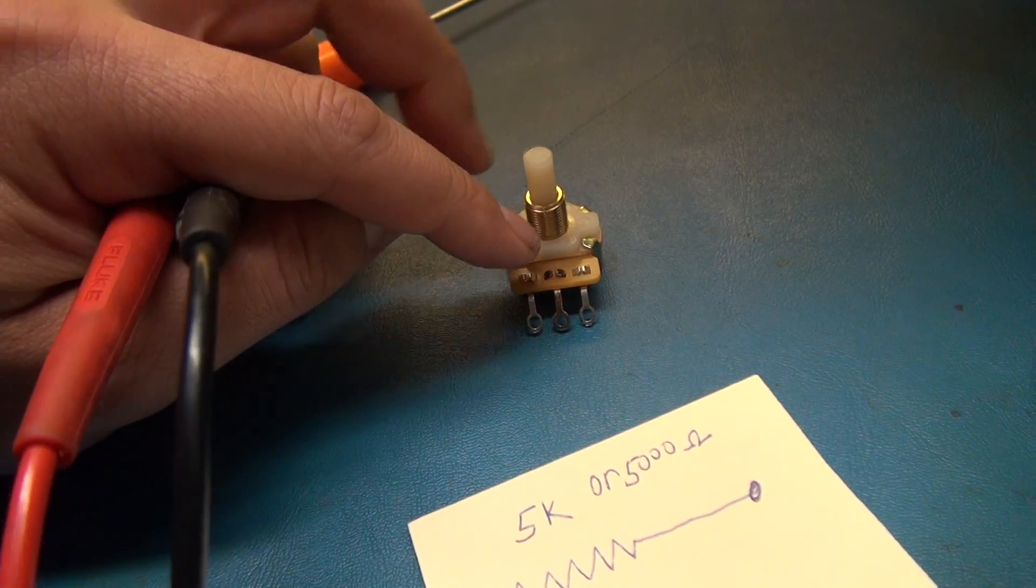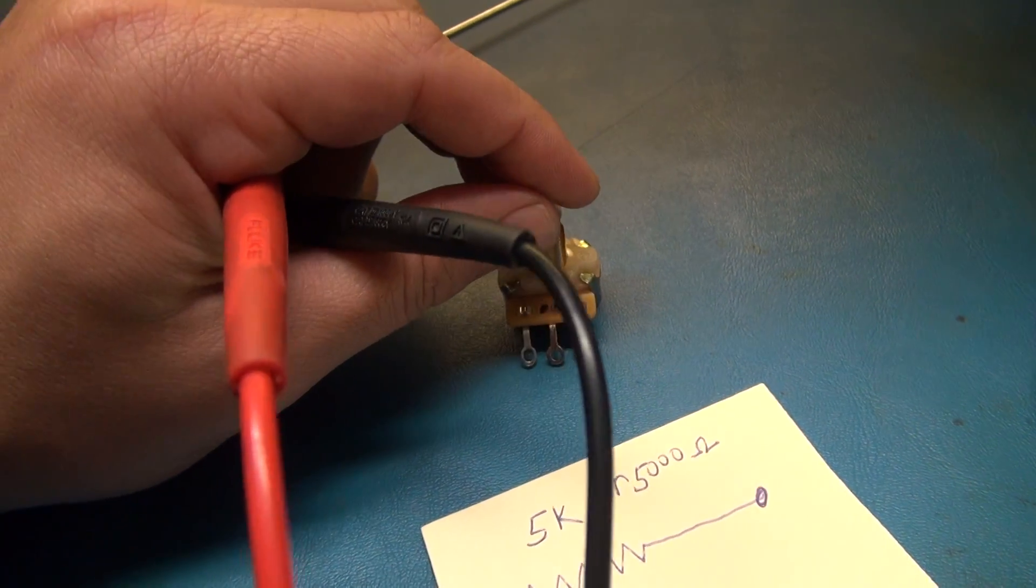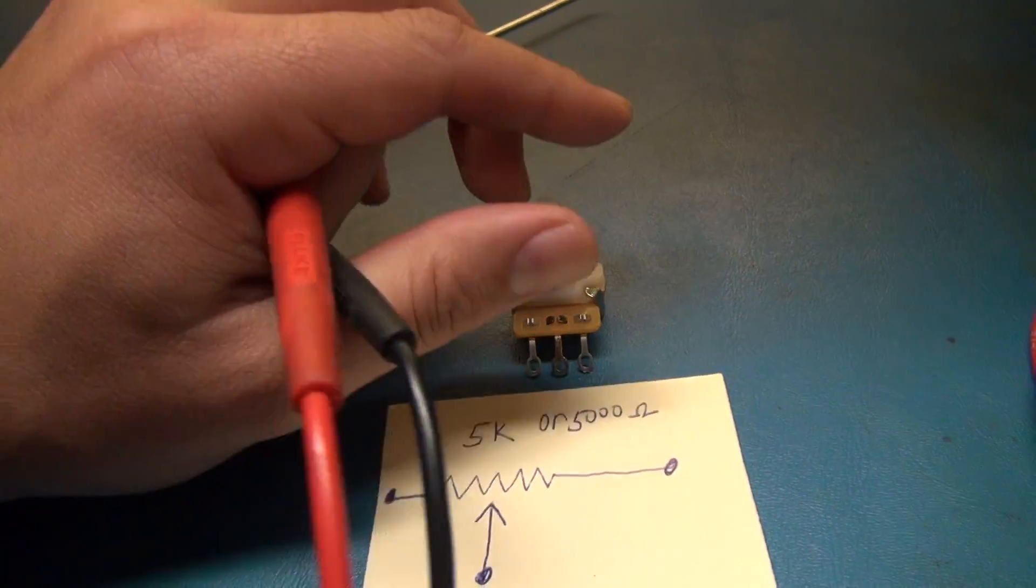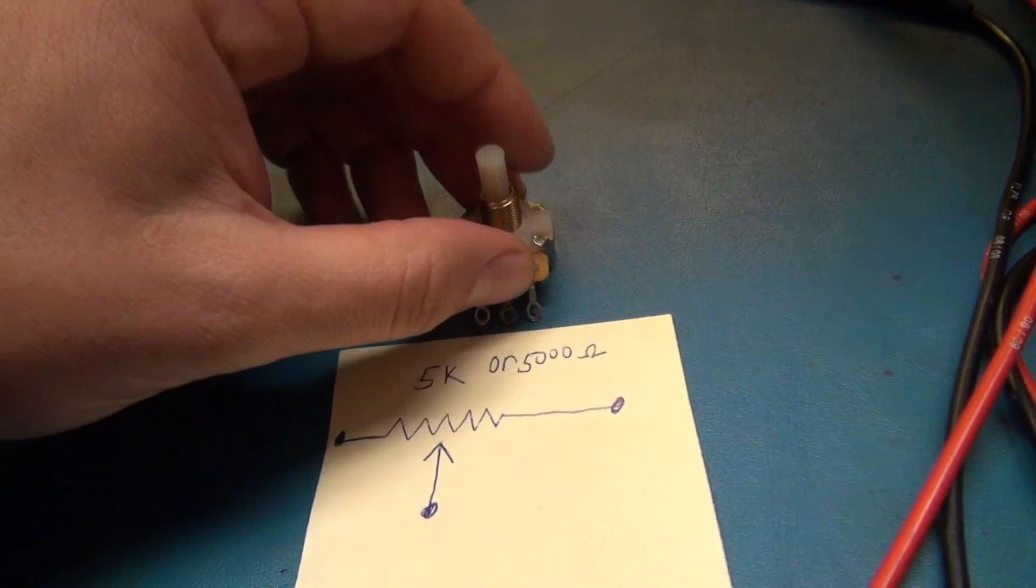That's how you can test the resistance of a potentiometer, but that's not necessarily going to give you a true test to see if it's actually okay. The only way you're going to test for scratchiness is if whatever device it's controlling - whether it's volume or a fader - you notice a significant scratchiness sound.